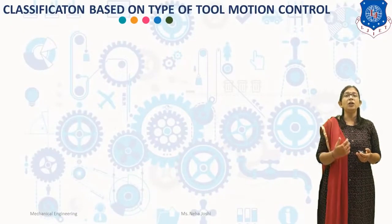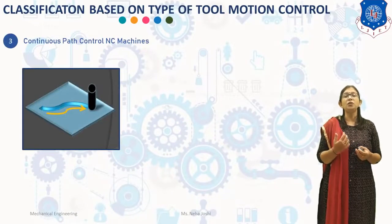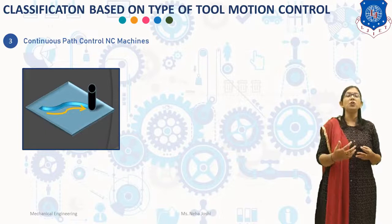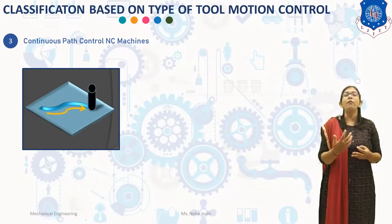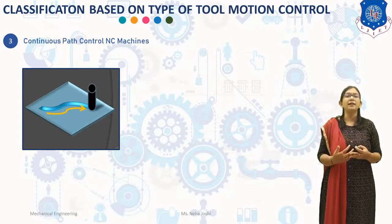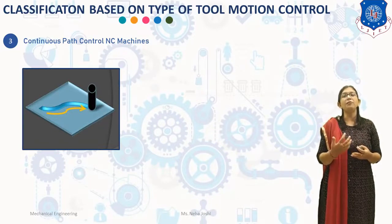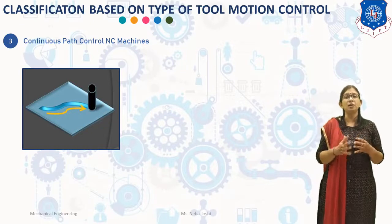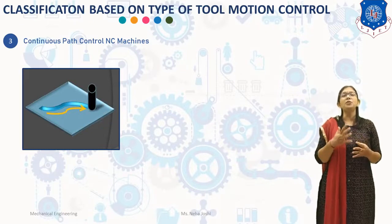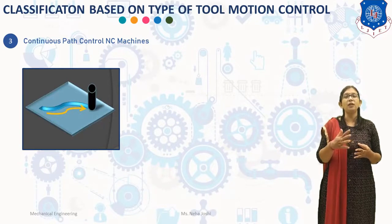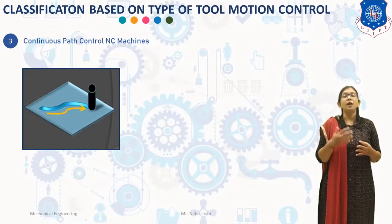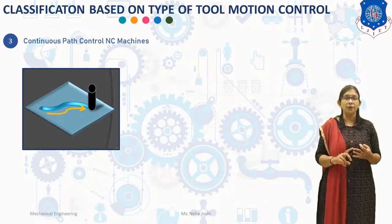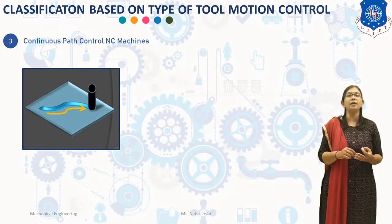The continuous path control NC machine uses a control system for continuous, simultaneous, and coordinated motions of the cutting tool and work base along different axes. Such control enables machining of different contour profiles and curved surfaces. In this control mode, most slide motions are controlled simultaneously so that the relative position passes through the desired contour path of the final shape. There are four types of continuous path control systems: two axis contouring, two and half axis contouring, three axis contouring, and multi-axis contouring.